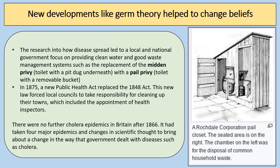Knowledge about how disease spread improved through the work of scientists like John Snow and Louis Pasteur. By the time of the 1866 cholera outbreak, the government was starting to abandon its laissez-faire attitude and introducing new laws to clean up towns and cities — that was what was required to stop the cholera outbreaks. The miasma theory was replaced by germ theory, making dealing with the cause of disease much easier as the importance of cleanliness became accepted. This led to a local and national government focus on providing clean water and good waste management systems. In 1875 a new Public Health Act replaced the 1848 act, forcing local councils to take responsibility for cleaning up their towns.